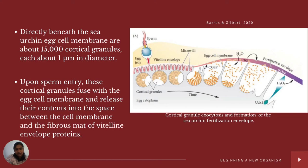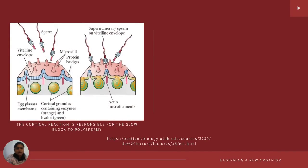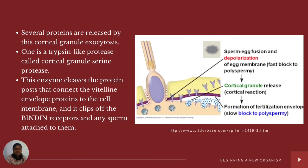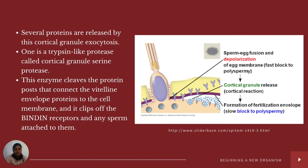The picture shows cortical granule exocytosis and formation of the sea urchin fertilization envelope, depicted as a thickened line. Several proteins are released by cortical granule exocytosis. One such protein is a trypsin-like protease called cortical granule serine protease, whose function is to cleave the protein pores that connect the vitelline envelope to the cell membrane, thereby clipping off the bindin receptors. Where sperms have bound, as long as there are no bindin receptors, no more sperms can bind to the egg.